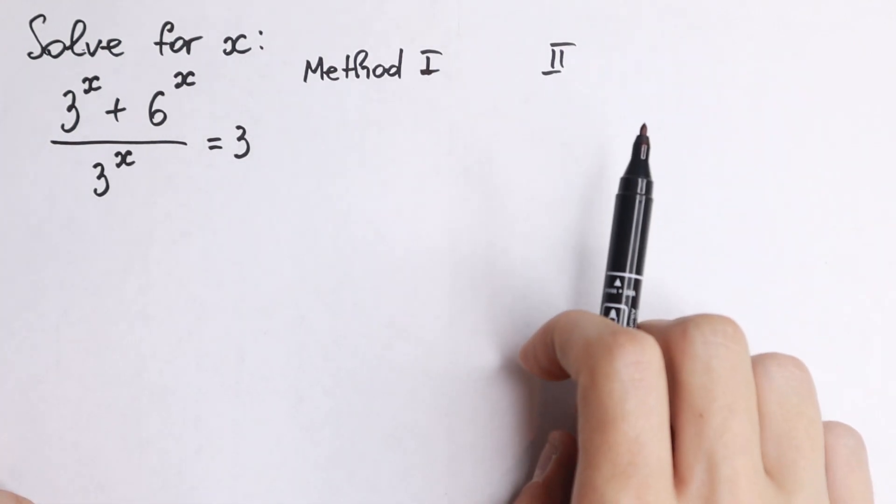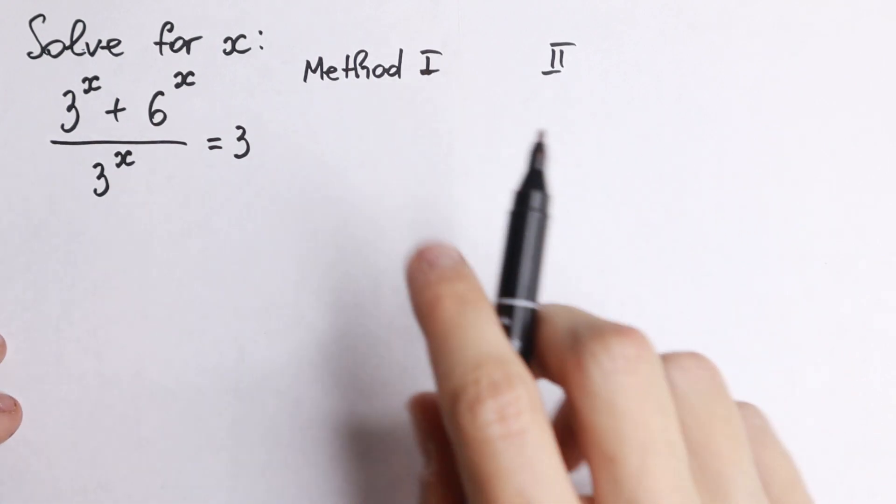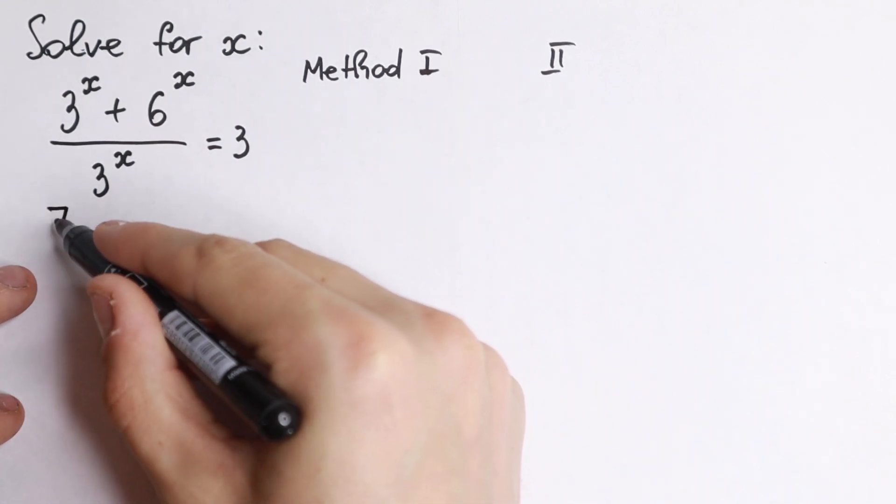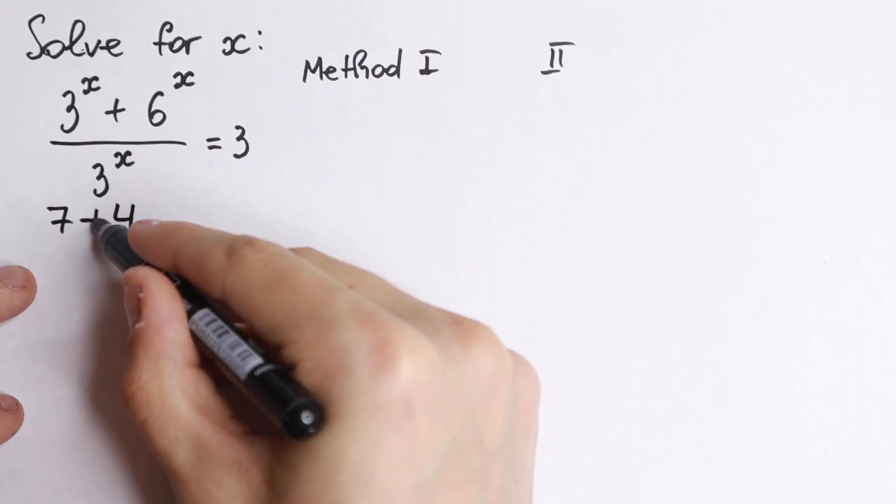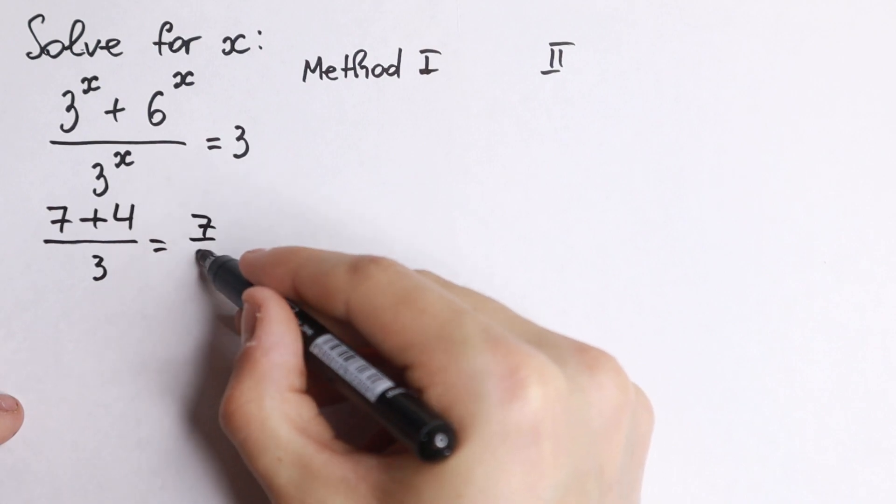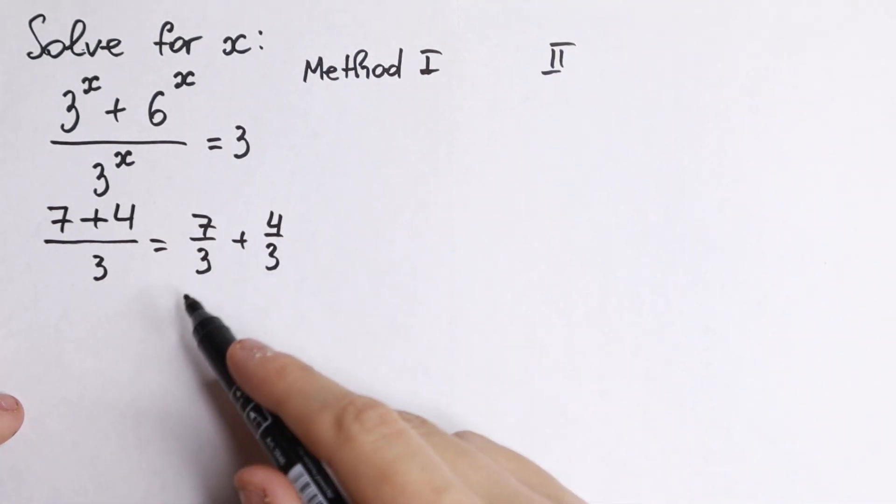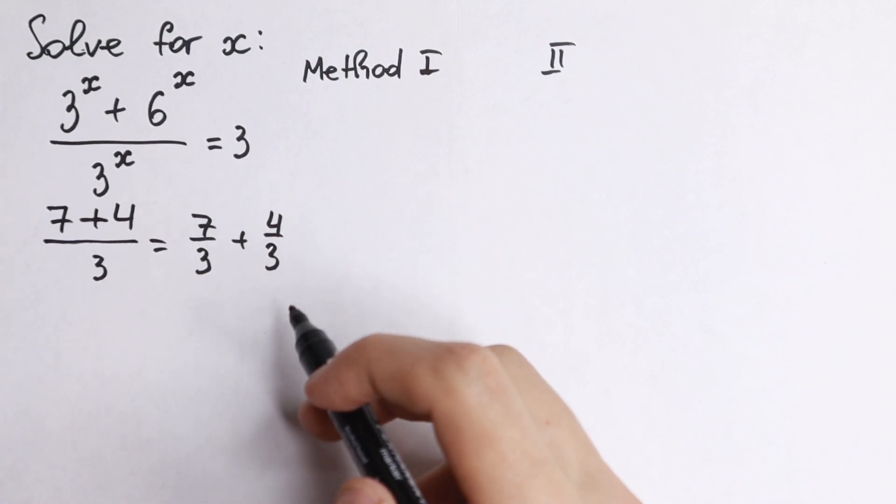I'm going to show you two really quick methods how we can easily solve it. First of all, we need to know a really good property. For example, if we have 7 plus 4 over 3, we can easily write it as 7 thirds plus 4 thirds. This is the same, but we find common denominator and add it in our denominator.